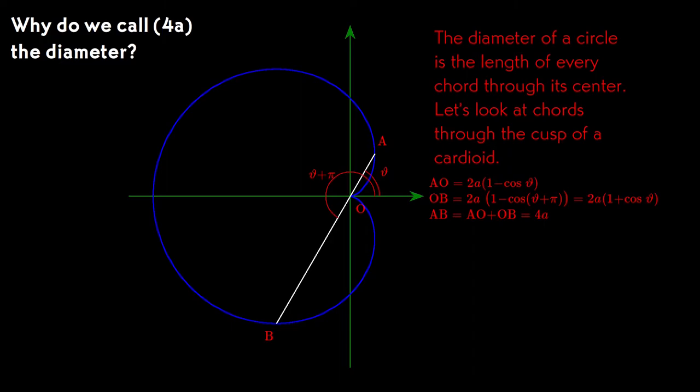And it's easy to prove it. One part, OA of the chord, is defined by the angle theta, and its length is 2A times the quantity 1 minus cos theta. The other part, OB of the cardioid, is defined by the angle theta plus a straight angle. Its length is 2A times the quantity 1 plus cos theta, and the two parts simply add up to 4A.